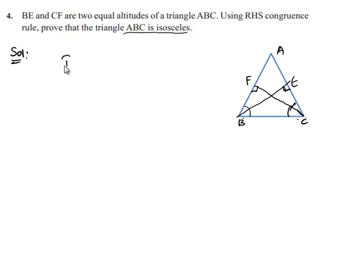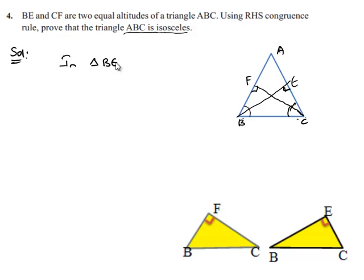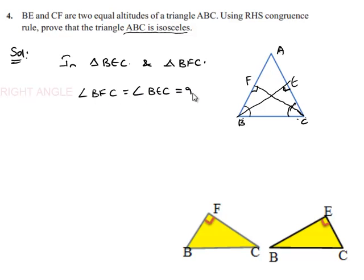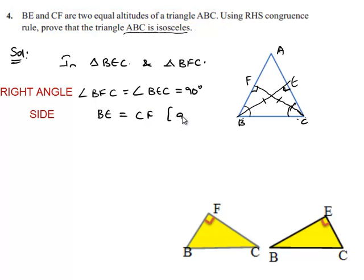Then, by applying the concept that corresponding sides and corresponding angles of two congruent triangles are equal, we can get angle B equal to angle C, and thereby prove that the sides opposite to equal angles are equal. Let us consider triangles BEC and BFC and note down the similarities. Angle BFC is equal to 90 degrees, as CF and BE are altitudes to sides AB and AC respectively. Also, BE is equal to CF, which is given. Here we have BC as the common hypotenuse to both right angle triangles BFC and BEC.